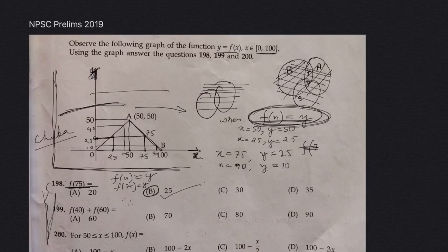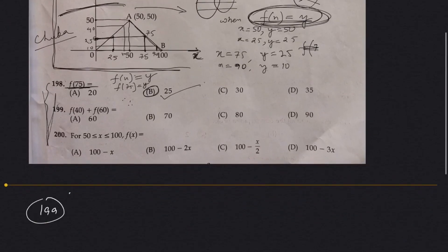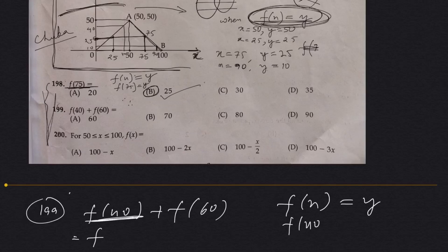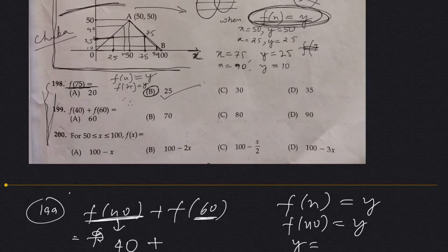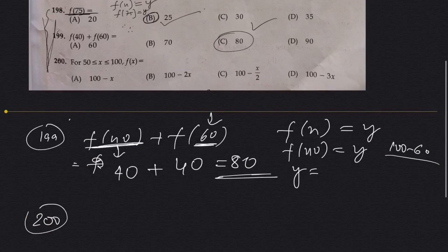For question 199: f(40) plus f(60) equals to how much? Since f(x) equals to y, f(40) equals to 40. For f(60), since x is greater than 50, y will be 100 minus 60, which is 40. So the total is 40 plus 40 equals 80. The answer is option C, which is 80.